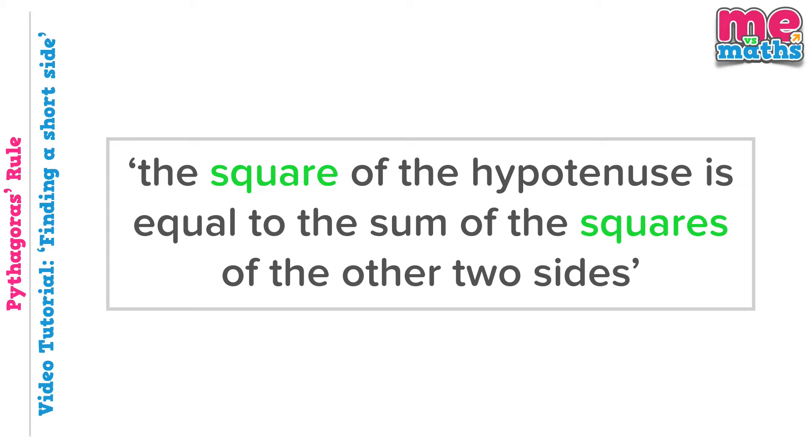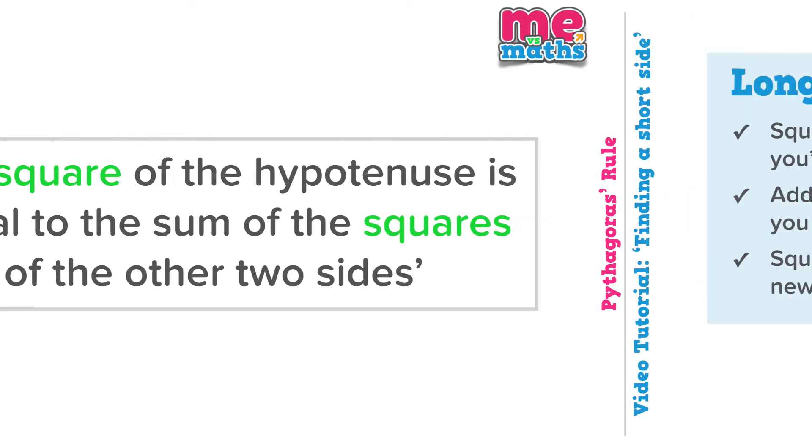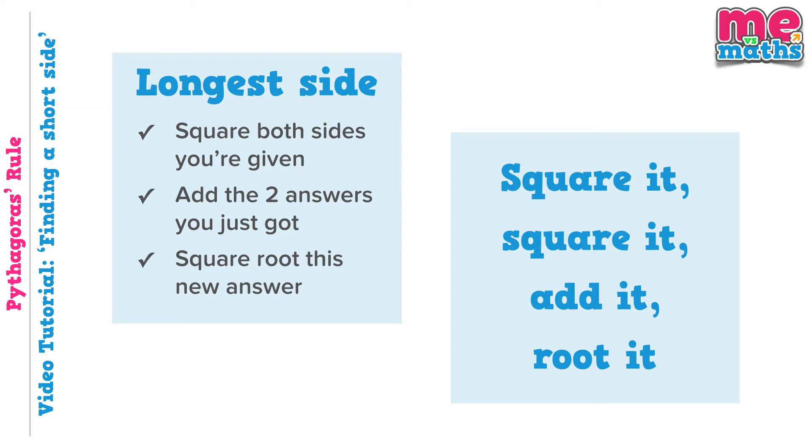Firstly let's remind ourselves of Pythagoras rule. The square of the hypotenuse is equal to the sum of the squares of the other two sides. We translated that in our first tutorial into a rule to find the longest side in a right angled triangle. And we translated the form on the left into a much simpler form to remember: